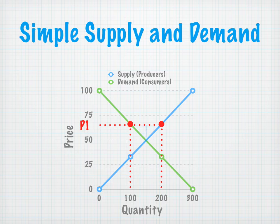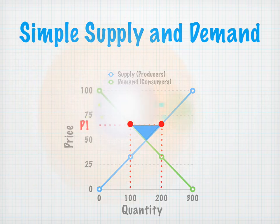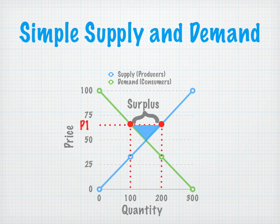Here's a problem. We have a production of 200 games but only demand for 100. That leaves us what we call surplus — the point in between the two curves. This is basically inventory sitting on the shelves, collecting dust, not doing anybody any good. This is a good that the producers have made that they're not being able to sell, and that's bad.